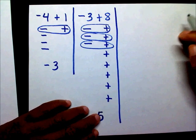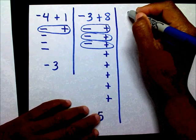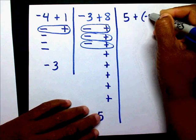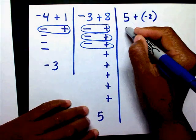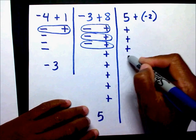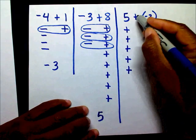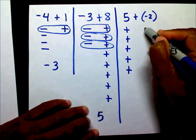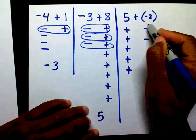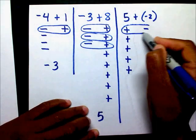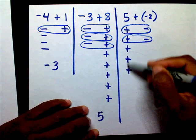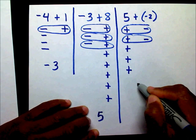The next one is five plus negative two. You have five positives and you want to add two negatives. Here's a zero, here's a zero. The final answer is three positives.